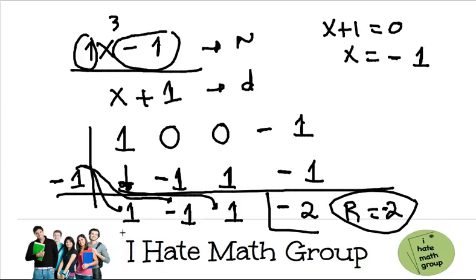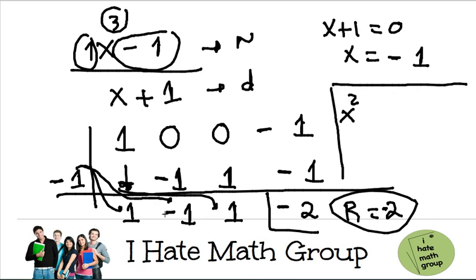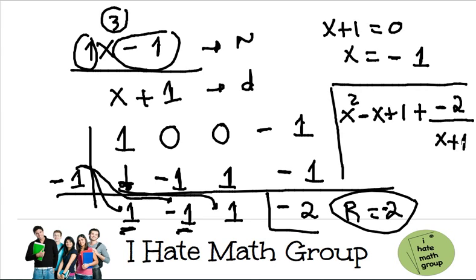My final answer: I started with a cubic, so now my answer is going to be a quadratic. It's x squared, because I have a 1, minus x, because I have a negative 1, plus 1. Then you write the remainder: put a plus, and then negative 2 over x plus 1. The reason I didn't do this before is because the first remainder was 0. But if your remainder is not 0, you write your answer, then a plus, with the remainder on top and your original denominator on the bottom.